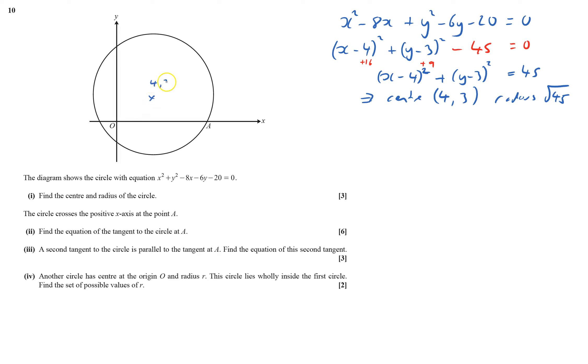It crosses the positive x-axis at point a. Find the equation of the tangent to the circle at a. The equation will be y equals mx plus c. I need to find the coordinates of a. I'll draw the tangent here and the radius.